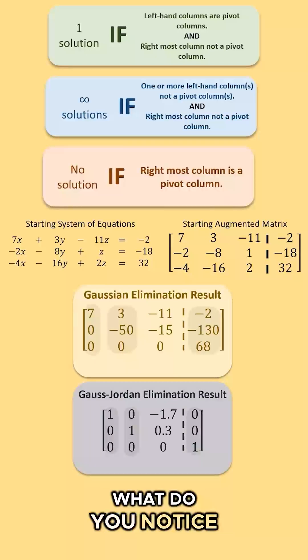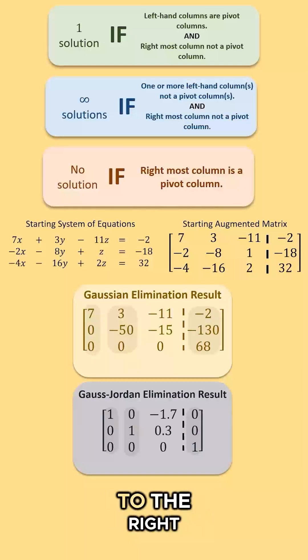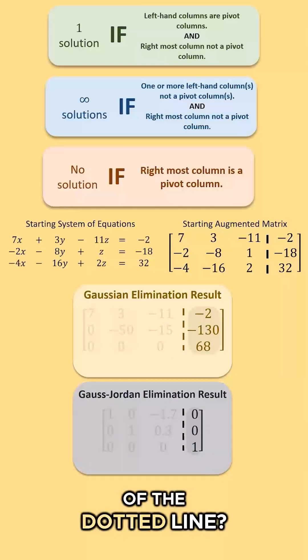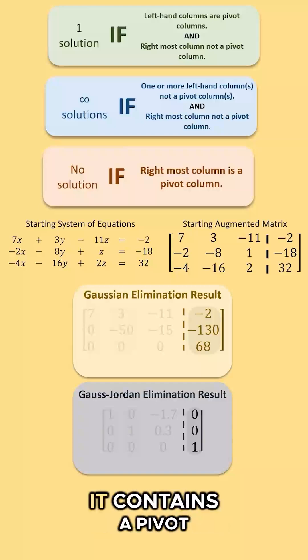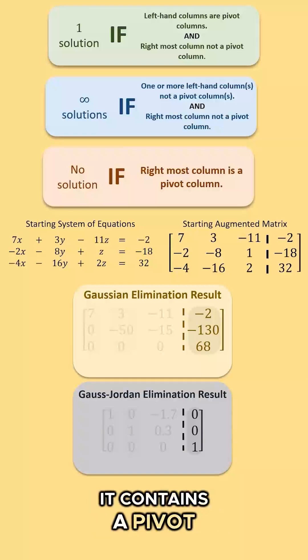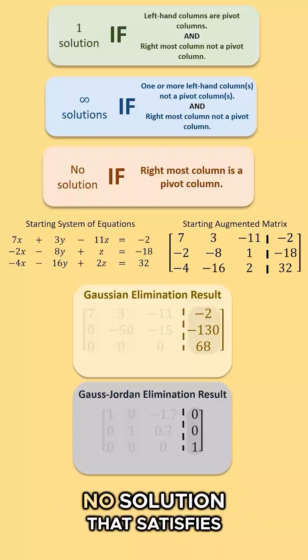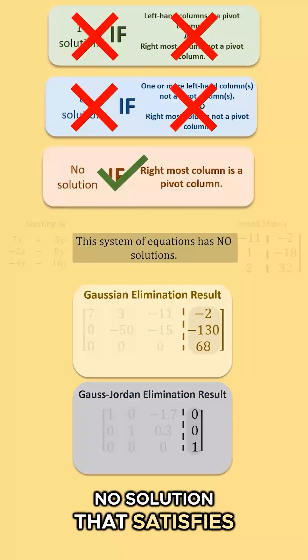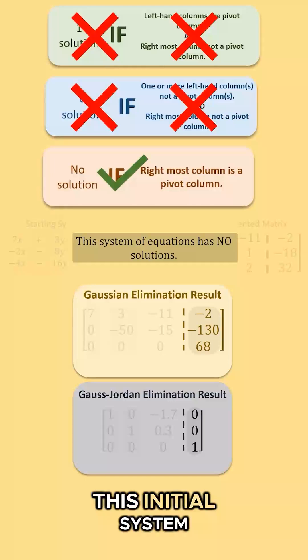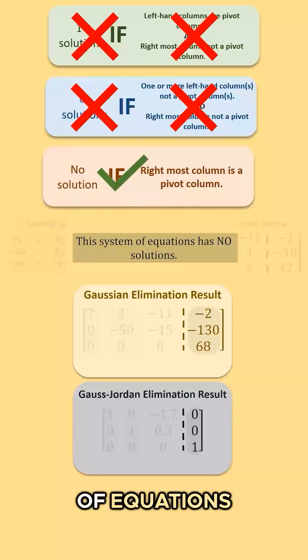What do you notice about the column to the right of the dotted line? It contains a pivot. Therefore, there is no solution that satisfies this initial system of equations.